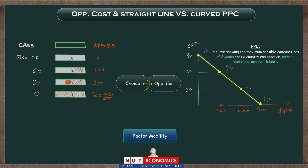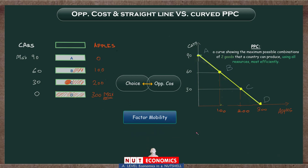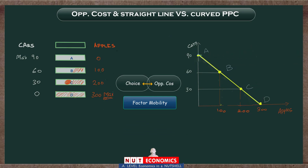These simple calculations are sometimes what you need to do in some of the MCQs. As I go through showing you these simple calculations, I will take the discussion in a direction so that by the end of the video you will understand the difference between perfect and imperfect factor mobility, and why sometimes this PPC is a downward sloping straight line and why sometimes it's a downward sloping curve.